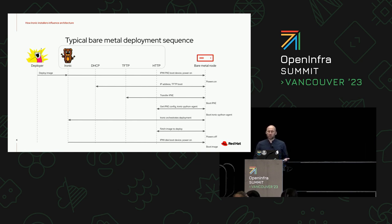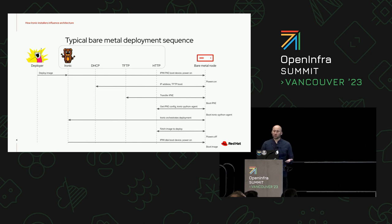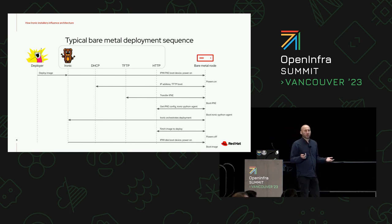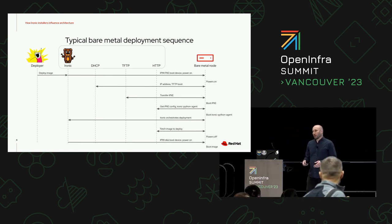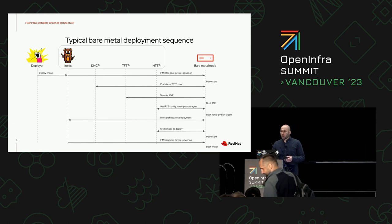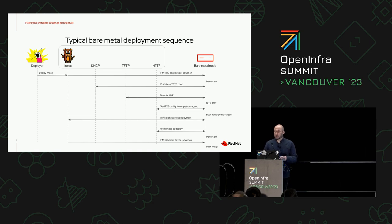That DHCP response includes a payload that needs to be downloaded via TFTP. That payload is actually iPXE, which is a PXE-like environment with the features we require. Once iPXE is running, it will be instructed to download Ironic Python Agent via HTTP. Once that is executing, the actual deployment process starts, with two-way communication between the agent and Ironic, during which there will be an image download via HTTP. Finally, there's an IPMI command to switch the boot device back to a real disk, and the device is powered on — that's the end of the provisioning process.